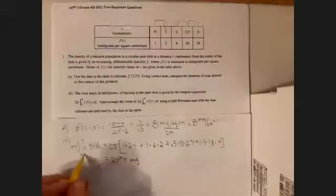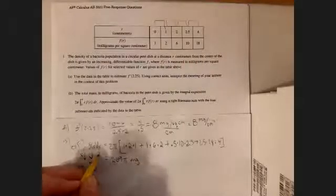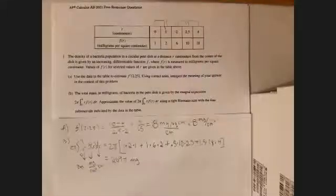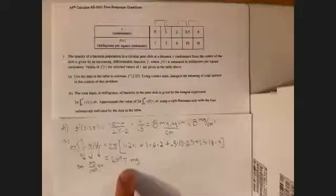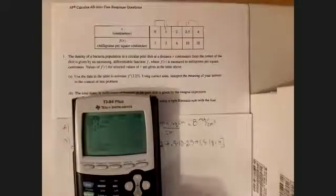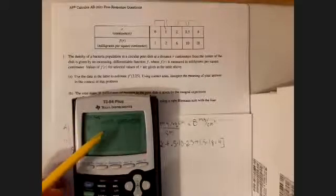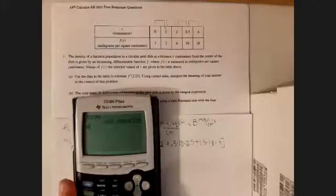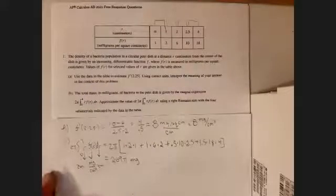Now, why the units are milligrams is the units for r are centimeters. The units for f of r are milligrams per square centimeter, so cm squared. And the units for dr, remember, dr stands for an infinitesimally small change in r, and r is centimeters, so that'd be centimeters. And the centimeters, centimeters, divided by centimeters squared, the units would all cancel out, to give you just milligrams. Now, it didn't ask us to interpret this, it just asked us to give an approximation using a right Riemann sum. Now, you could also report the decimal to three decimal places, 269 pi, you have 845.088 to three decimal places. You could report that as well, because again, you're allowed to use calculator on this one.